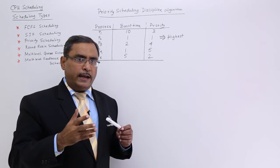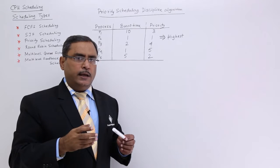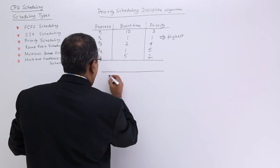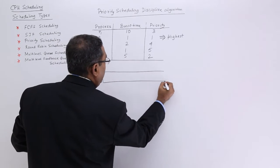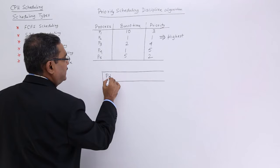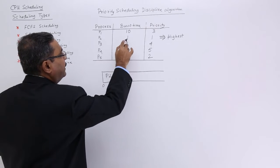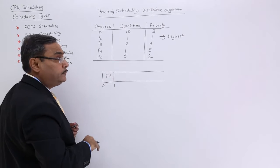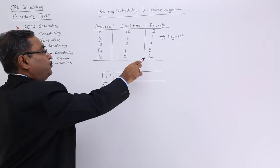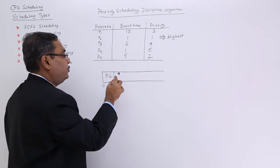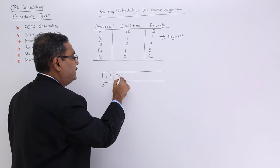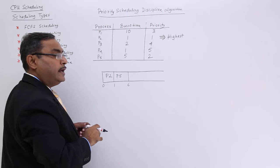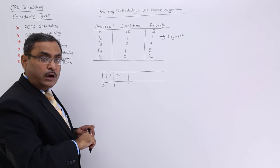So, now, how can I do the scheduling? And let me draw the Gantt chart. Process P2 is having the highest priority. So, P2 will get the chance at first. And P2 is having the burst time of 1 unit. So, P2 will get completed here. Then, which is having the priority 2? P5 is having the priority 2. So, next, P5 will get executed with the burst time of 5. So, P5 will get terminated at 6. 5 plus 1 is equal to 6.